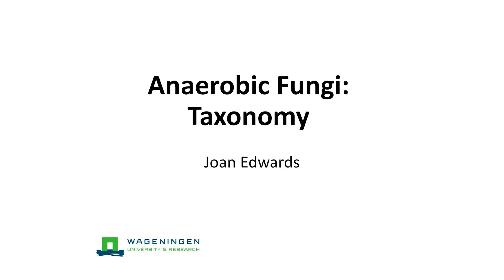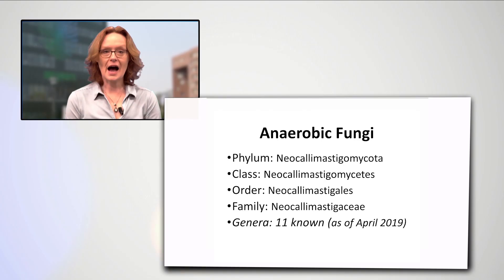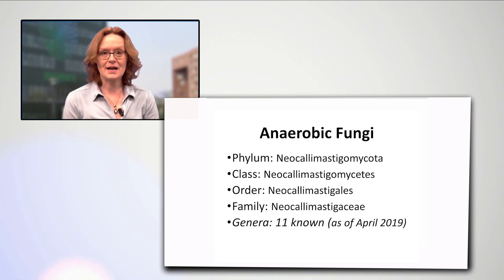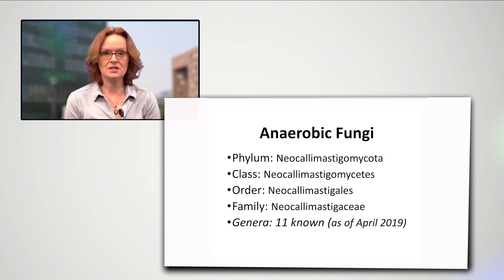This is the third in a series of three films about anaerobic fungi, and this film is about their taxonomy. Anaerobic fungi are the sole members of the phylum Neocallimastigomycota. Within this phylum there are currently 11 genera characterised. These genera all belong to just one family, the Neocallimastigaceae. I will now introduce you to each of these genera in the order that they were discovered.